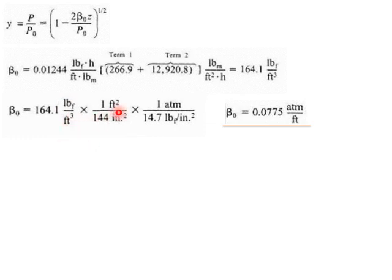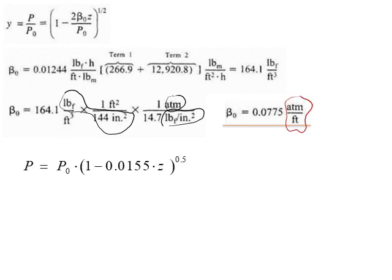Then we can convert the pound-force per inch squared, which is psi, and convert it to atmospheres. And then we get the value of β₀ in the units of pressure per foot. So now we can substitute in the above equation, and there we go. Now we can calculate P as a function of Z.